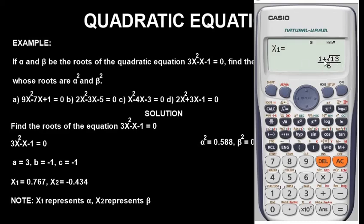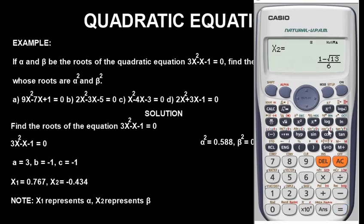Now let's press equals to find our roots x1 and x2. x1 is shown as a fraction — let's change it to a decimal by pressing SD, giving us 0.767. So x1 = 0.767. Press equals again for the second root x2, change it to decimal by pressing SD, and we get −0.434.